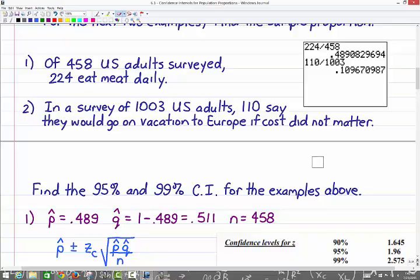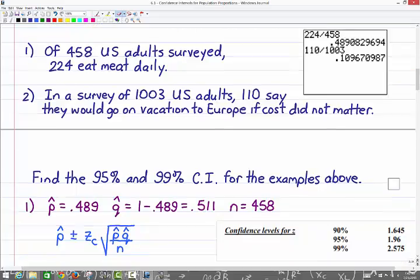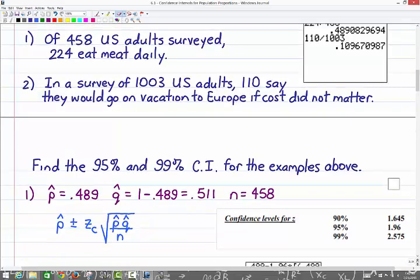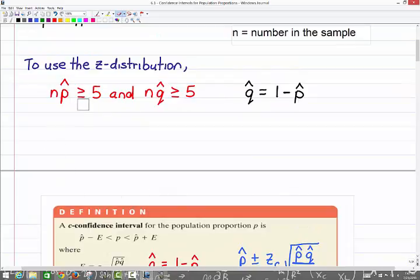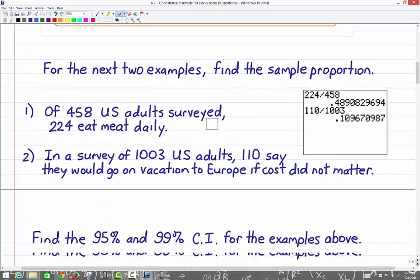So what we're doing here now is we're going to find the 95% and the 99% confidence interval for the examples above. So for the first one we were trying to come up with a 95% interval of the proportion of all U.S. adults that eat red meat daily by using that sample proportion. So I used .489 here. Your Q hat would be one minus .489 which is .511 and then N is 458. Now over here I copied those three confidence levels for the Z, 90, 95 and 99. Remember these will be Z's and I can show you that NP hat and NQ hat works for this.